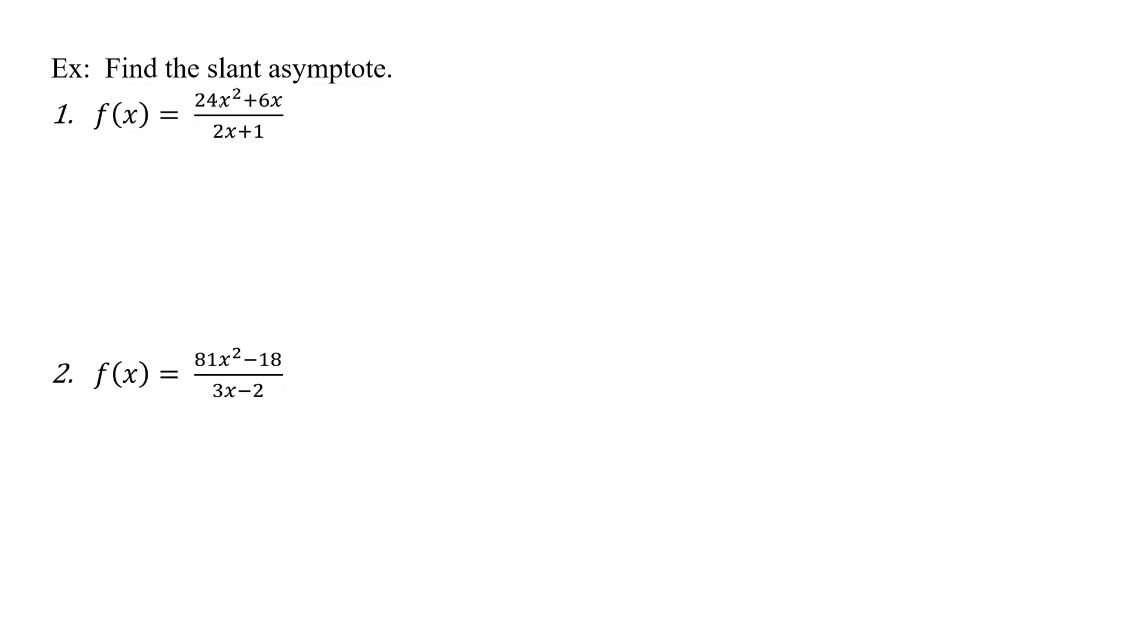you just take and divide the denominator into the numerator. When we do that we'll have 2x plus 1 into 24x squared plus 6x plus 0. Now again you could use synthetic division, but because sometimes you're going to end up with an x squared in the denominator, I'm just going to do long division like this and not worry about it.